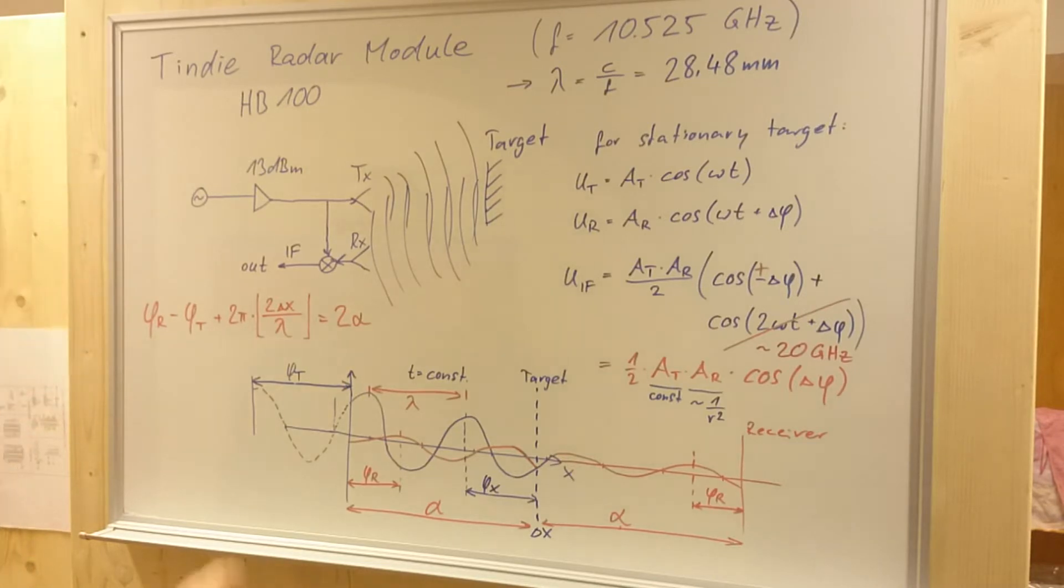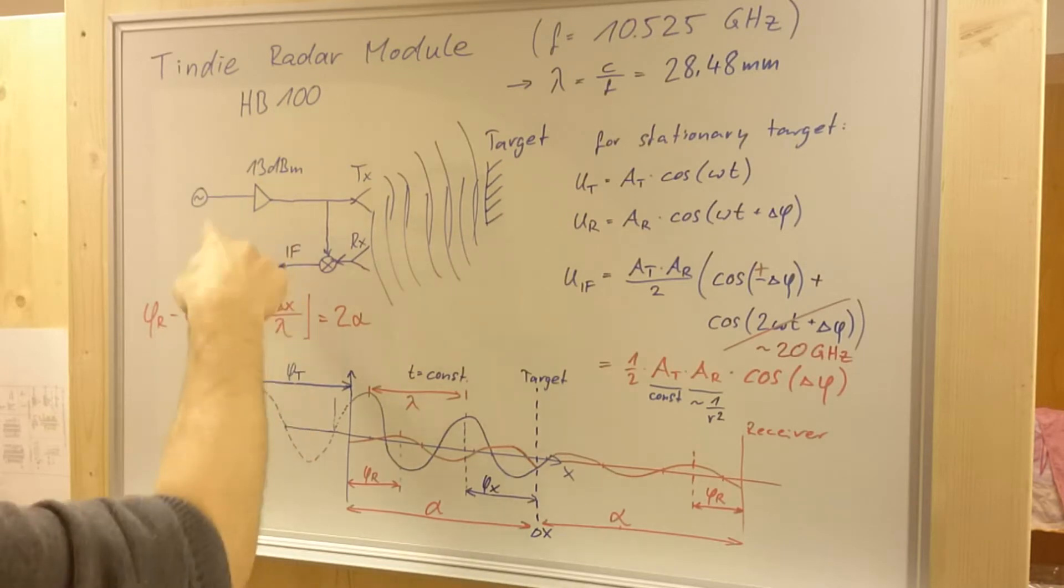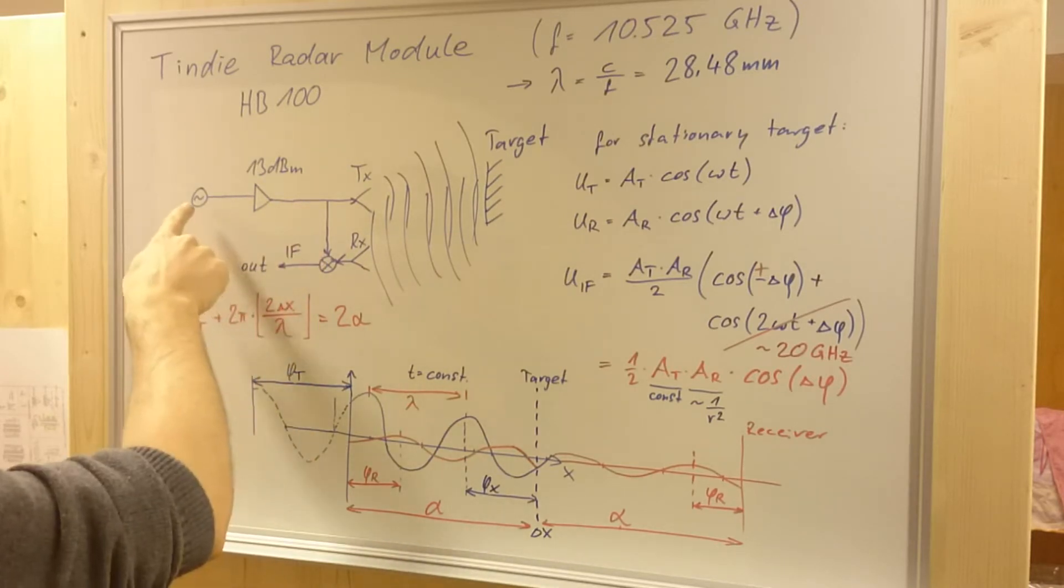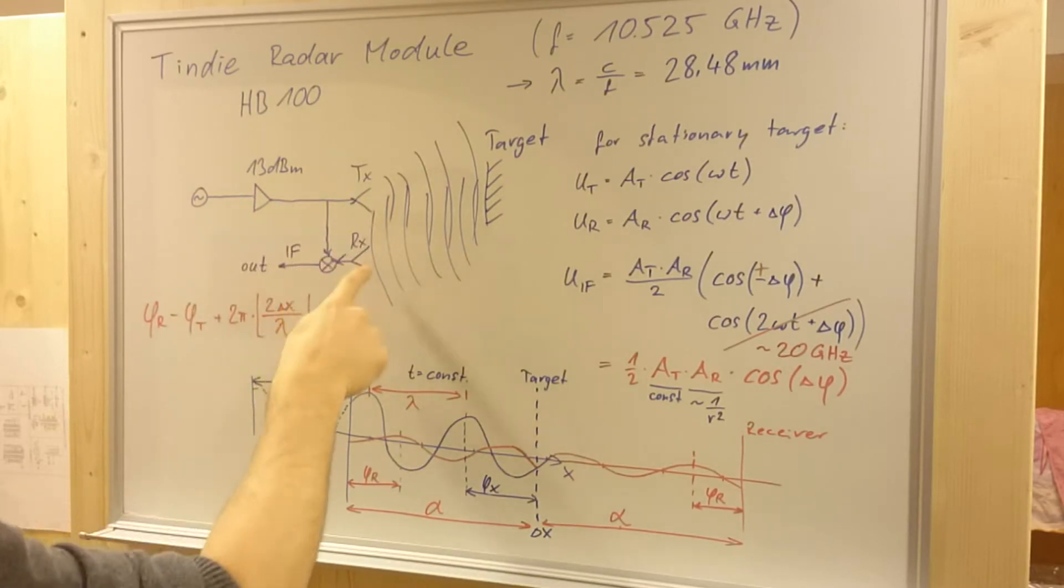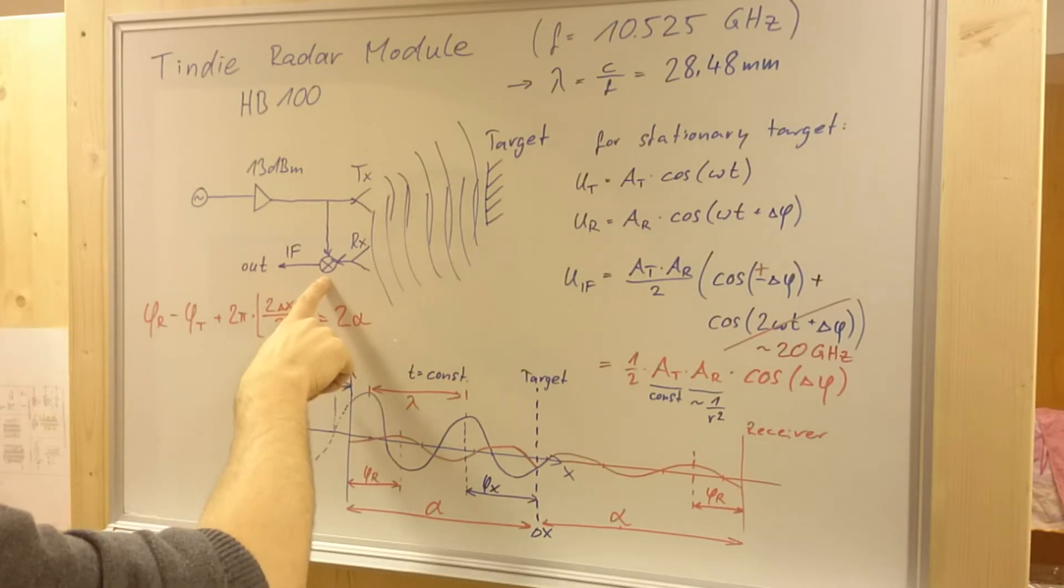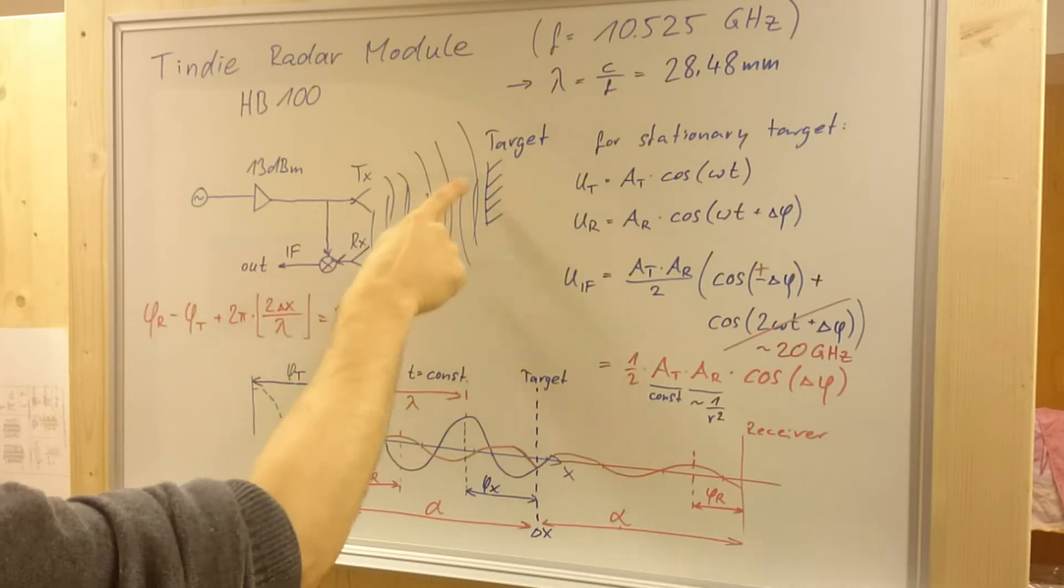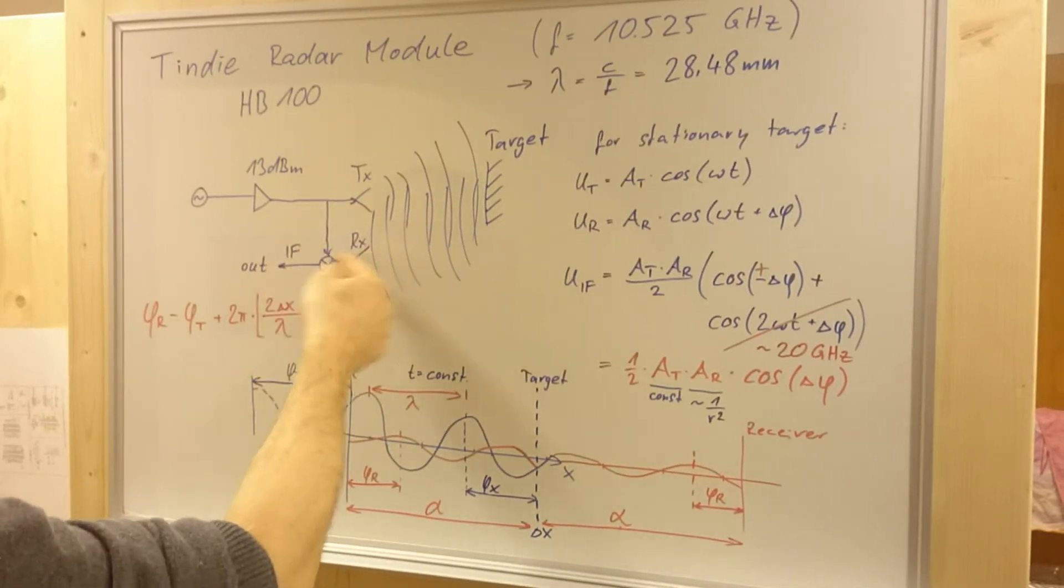The internal function of the radar module in a very simple form looks like this. We have a sine wave signal source with a power driver, the transmitting antenna and the receiving antenna. This is a multiply element, which is called mixer. And this multiplies the transmitted signal with the received signal.